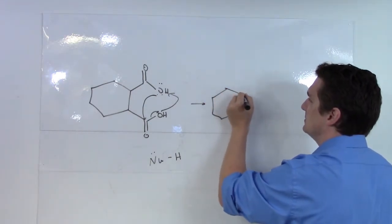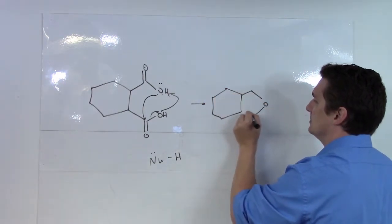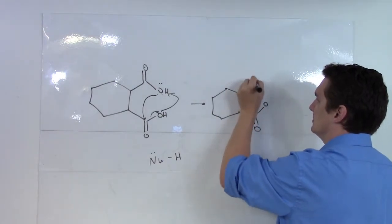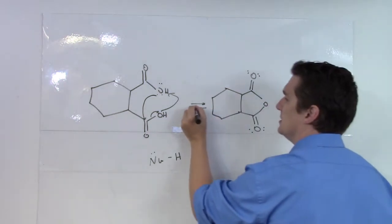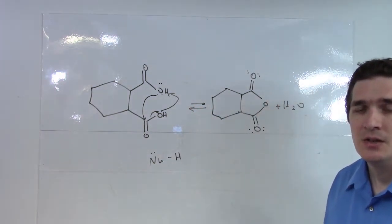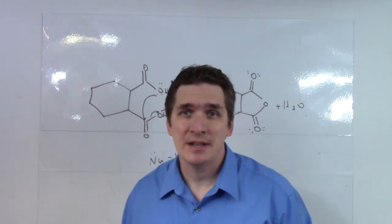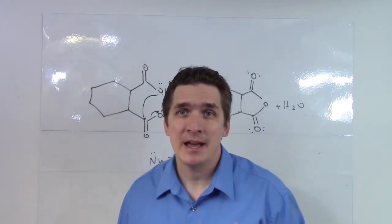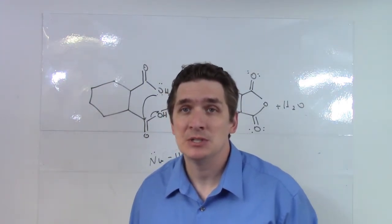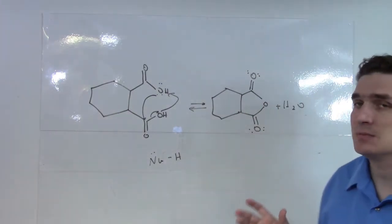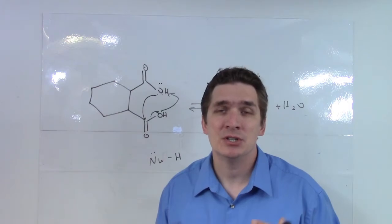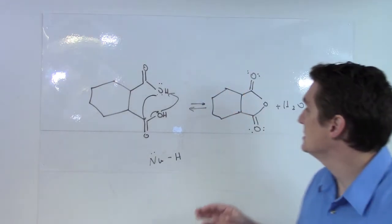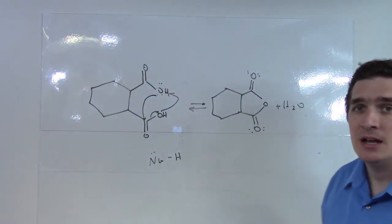And this reaction is reversible. So adjacent carboxylic acid groups can react with each other, particularly if we form 5 and 6 membered rings, and these rings come about basically through dehydration of the two carboxylic acid groups to give us the acetic anhydride groups.